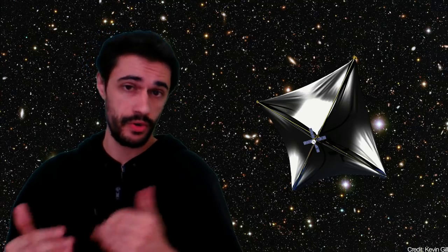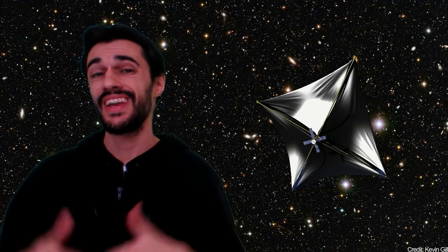Around 1,000 nanocrafts would be launched to a high altitude orbit. They would deploy and a laser array based on Earth would accelerate them one by one. The objective is to send them within 150 million kilometers from Proxima B in order to photograph the exoplanet. With this method, the nanocrafts could achieve 20% the speed of light.